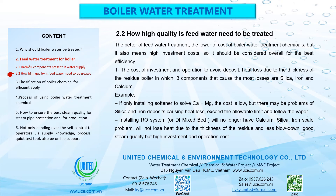2.2 How high quality does feed water need to be treated? The better the feed water treatment, the lower the cost of boiler water treatment chemicals, but it also means higher investment costs, so it should be considered overall for the best efficiency. 1. The cost of investment and operation to avoid deposit heat loss depends on the thickness of the residue in the boiler; the three components causing the most losses are silica, iron, and calcium. For example, if only a softener is installed to solve Ca plus Mg, the cost is low, but there may be problems with silica and iron deposits causing heat loss exceeding the allowable limit and following the vapor. Installing an RO system or D-mixed bed will eliminate calcium, silica, and iron scale problems, will not lose heat due to residue thickness, and will mean less blowdown and good steam quality, but at high investment and operation cost.